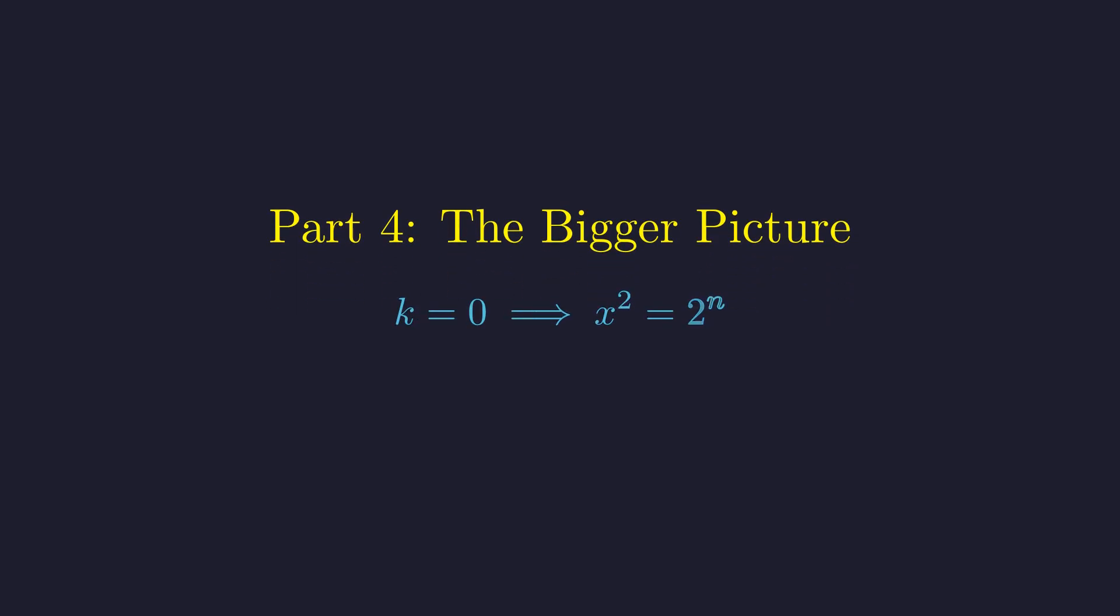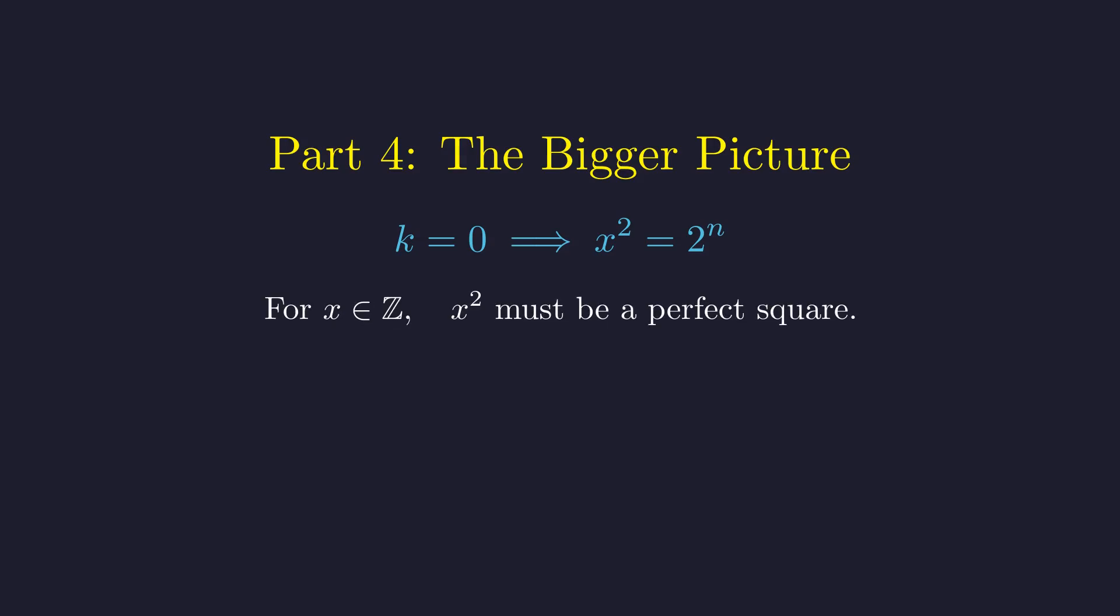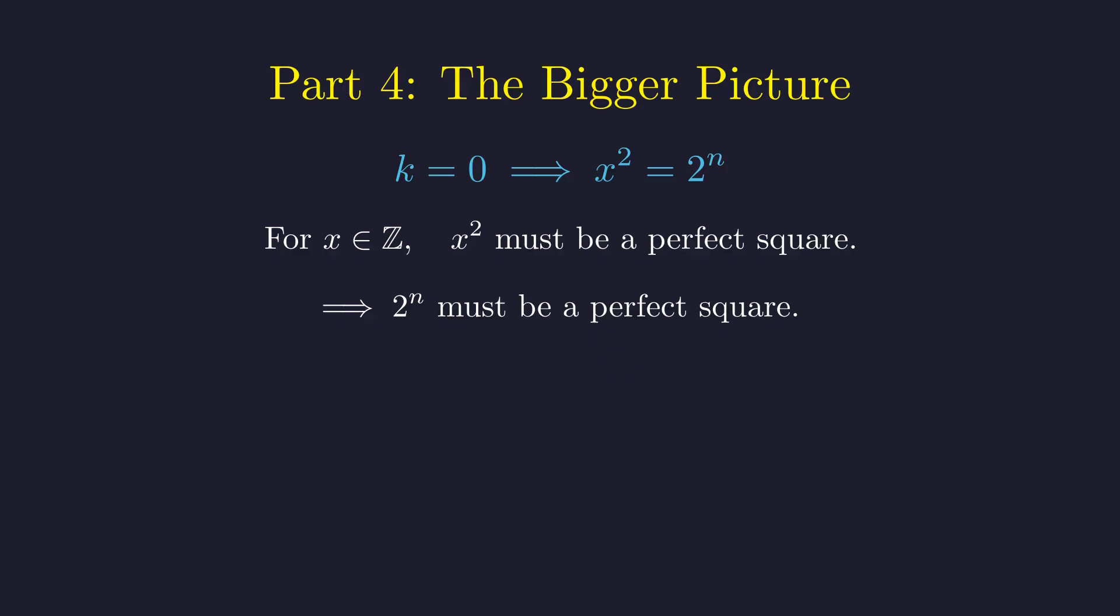For k equals 0, our equation simplifies to x squared equals 2 to the n. For x to be an integer, the left side must be a perfect square. Therefore, the right side, 2 to the n, must also be a perfect square.